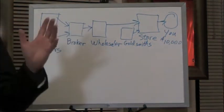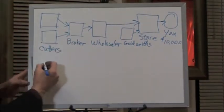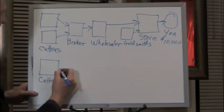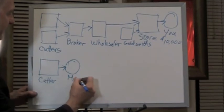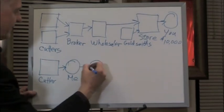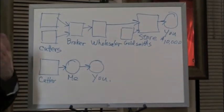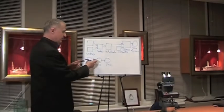Now the internet, you take this whole sequence and you just condense it. So you have the cutter, and then you have me, and then there is you. Now I do a substantial volume, more than enough to allow that I deal directly with diamond cutters. So there's nobody in between.